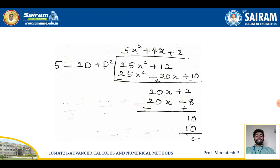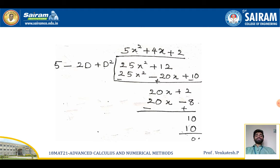Now we find the particular integral. Taking the x-terms in decreasing order: 25x² + 12, and the D-terms in increasing order: 5 - 2D + D². To find the first term, divide the leading x-term 25x² by the leading D-term 5, giving 5x². Multiply the entire D-expression (5 - 2D + D²) by 5x².